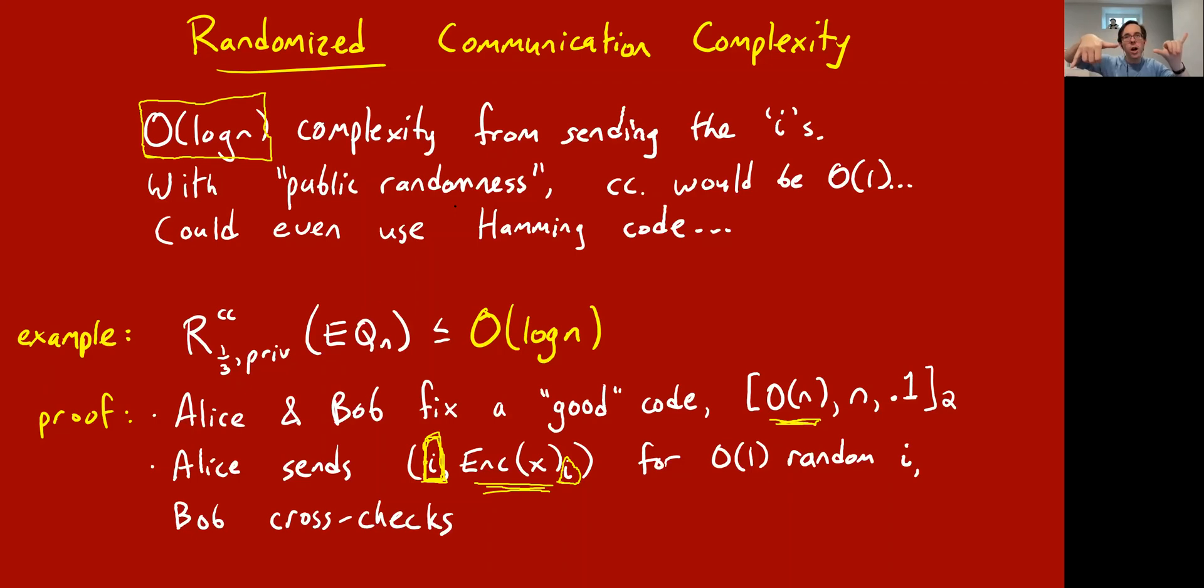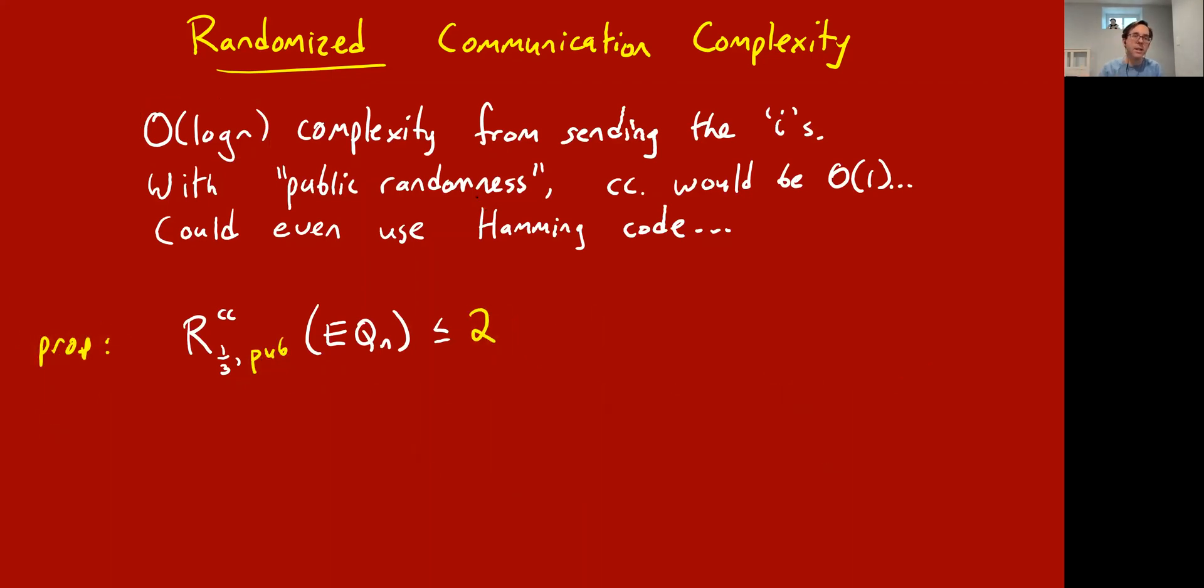That's all to illustrate this fact that in the public coins model, the communication cost, the randomized communication cost of the equality function on n bits with error one third or even one fourth, is two, which is pretty awesome. This long Hamming code story I've told you, you can use it, or when you compress it down to its essence it becomes this. Alice is sitting here with her input little x, Bob is sitting here with his input little y. These are n bit strings. They both get to look at these random bits that are in the sky.